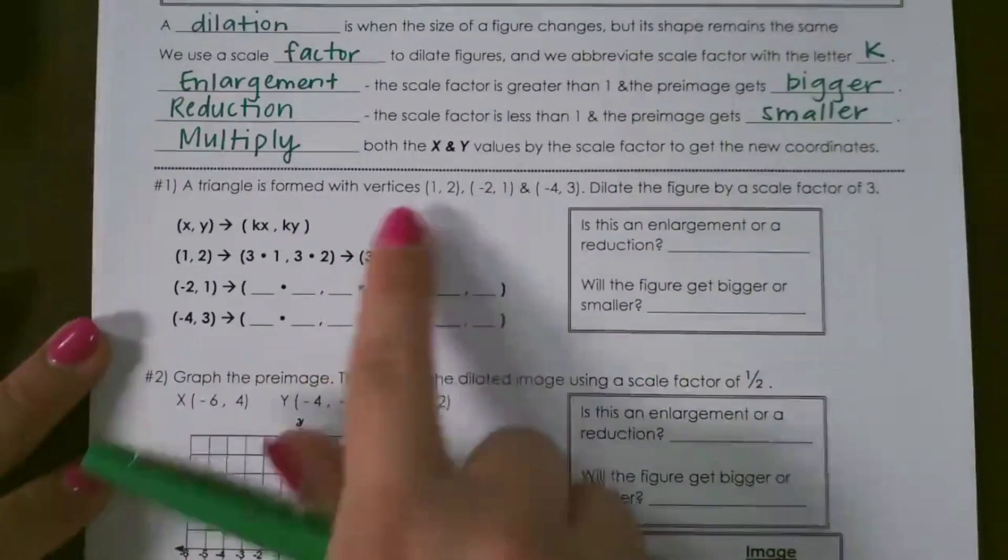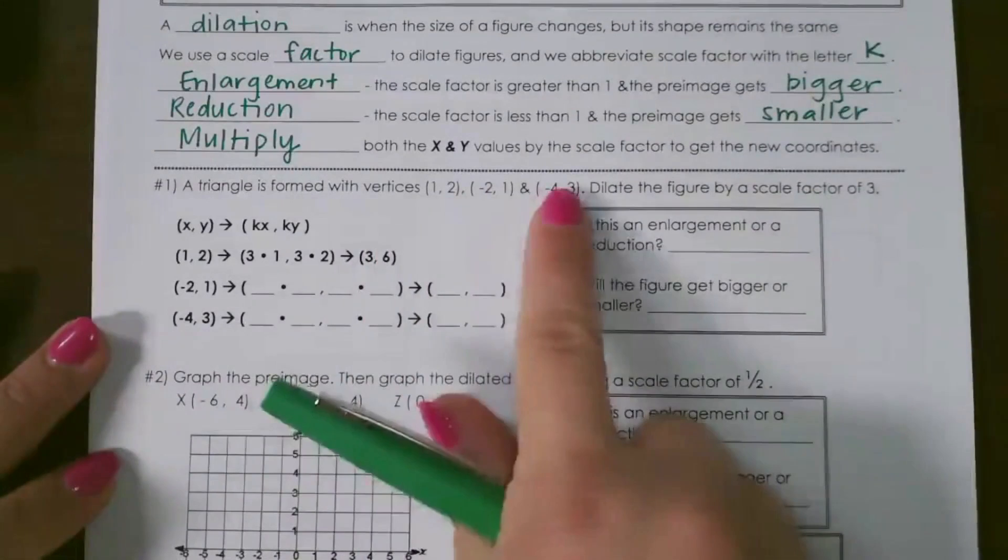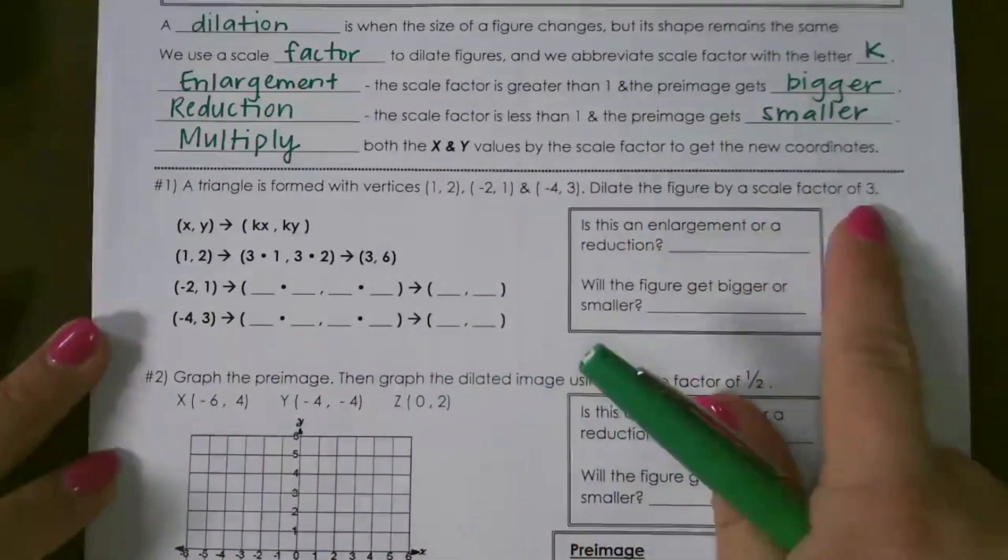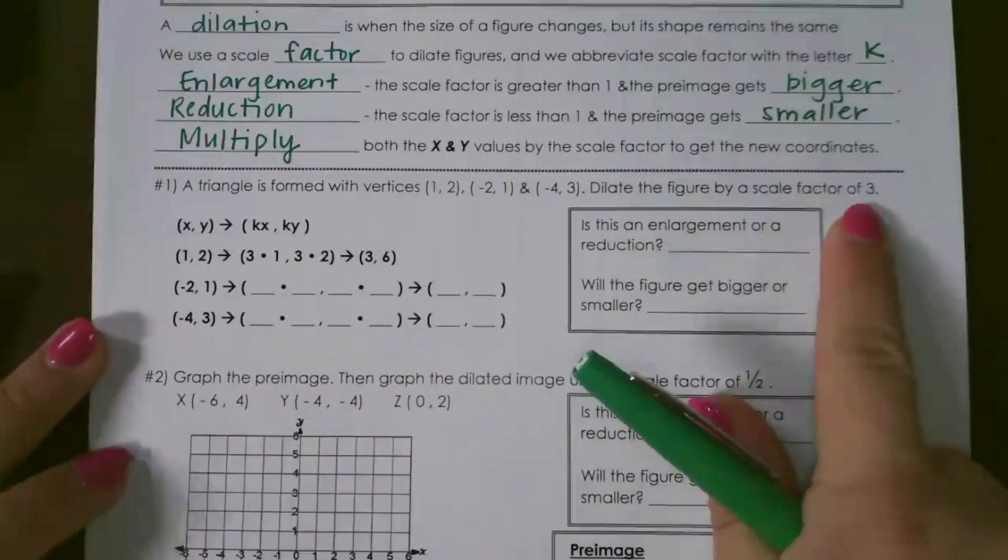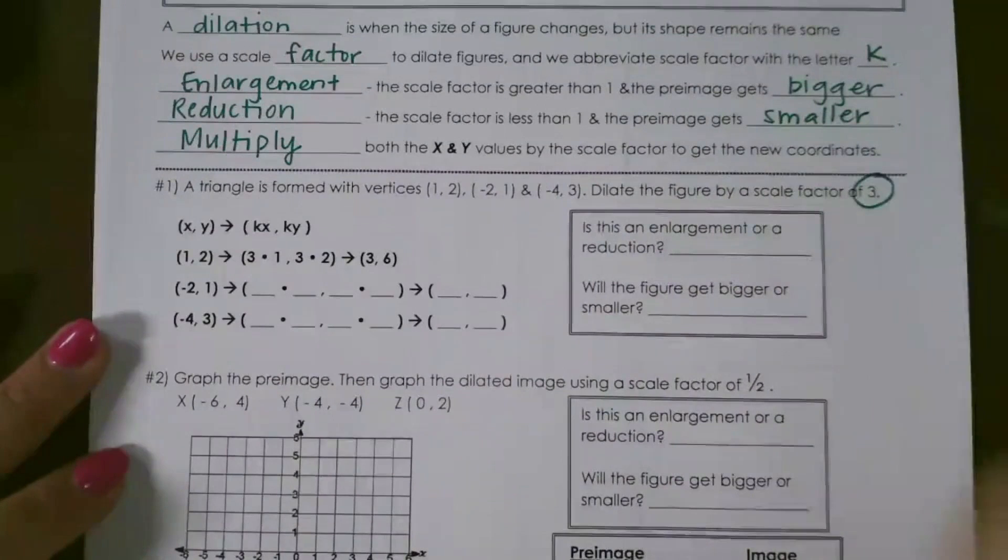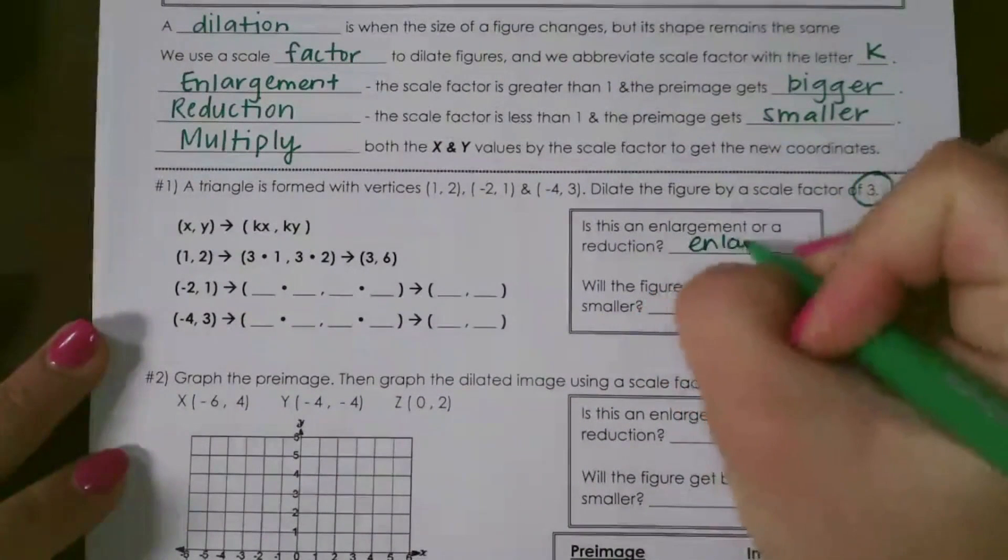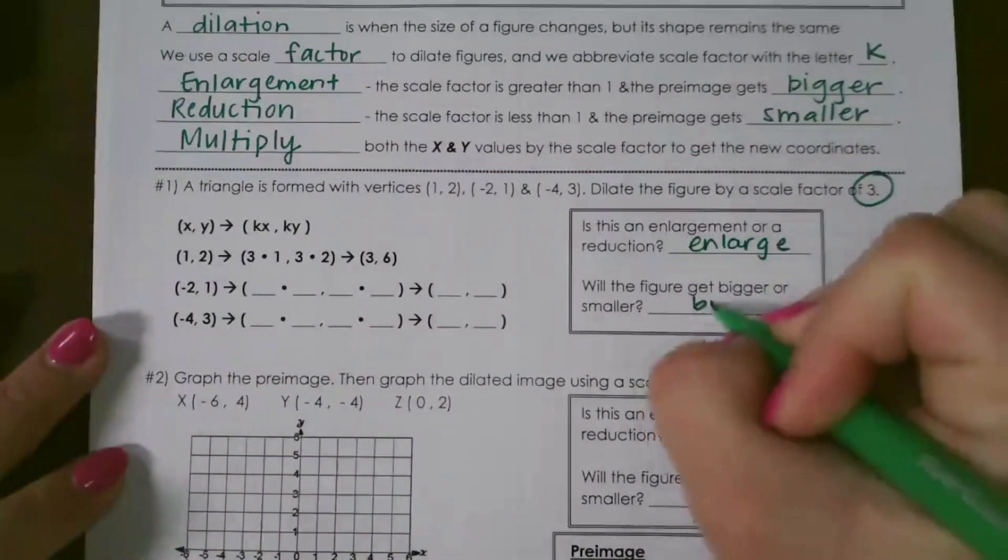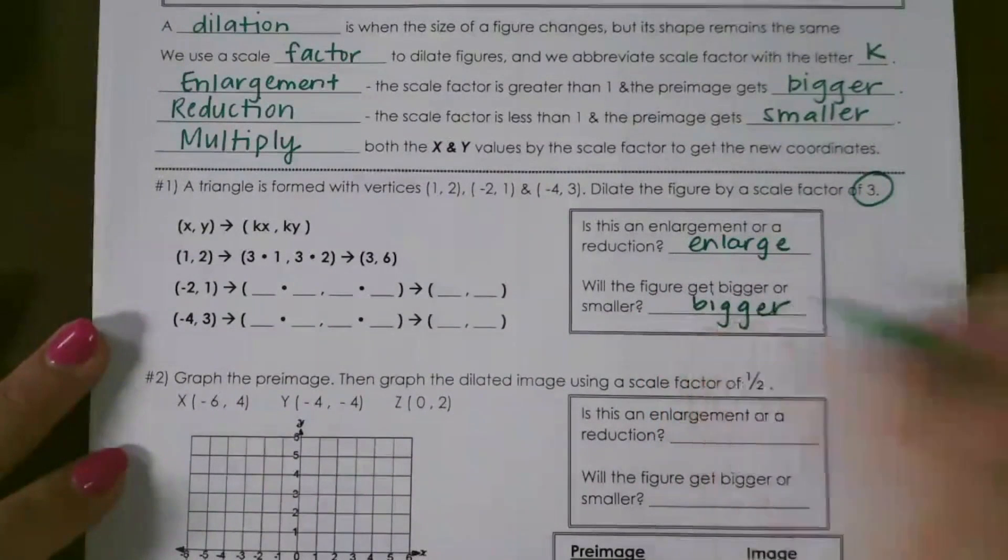So let's look at this example. We have our triangle with these coordinates, and we want to dilate this figure with a scale factor of 3. Since it has a scale factor of 3, it's going to be an enlargement, and it's going to get bigger because it's greater than 1.